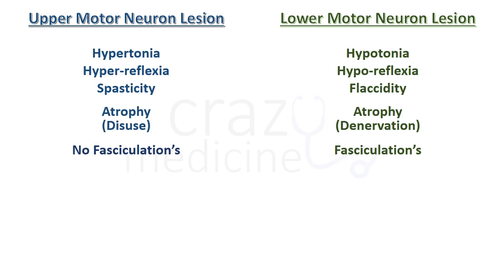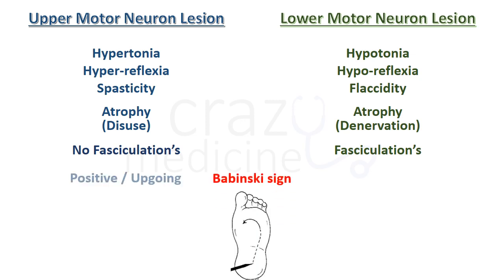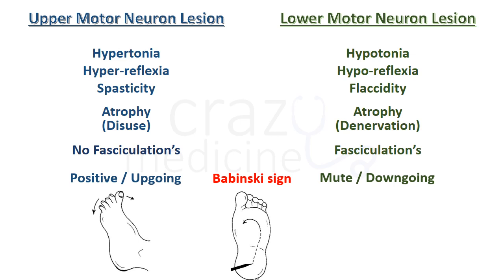The main differentiating point is the Babinski sign. In UMN lesion, there will be a positive Babinski sign — when you scratch the foot, there will be dorsiflexion or fanning of the toes, or we can say the plantar response is up-going. In LMN lesion, the Babinski sign or plantar response is mute or down-going. Remember, we do not use the term 'negative' for Babinski sign — whenever asked, say it is down-going or normal.